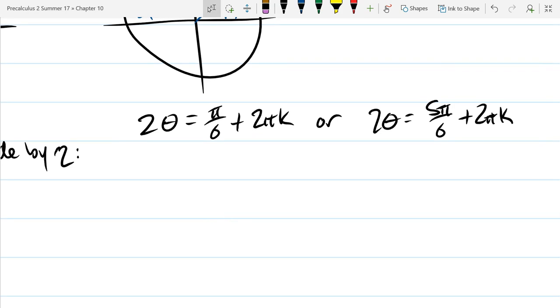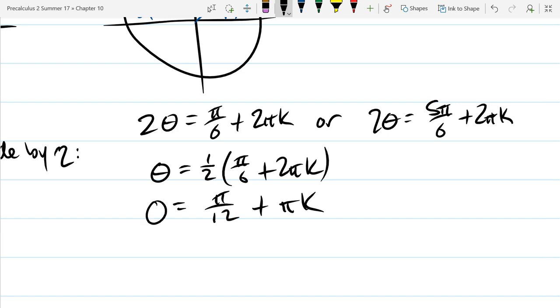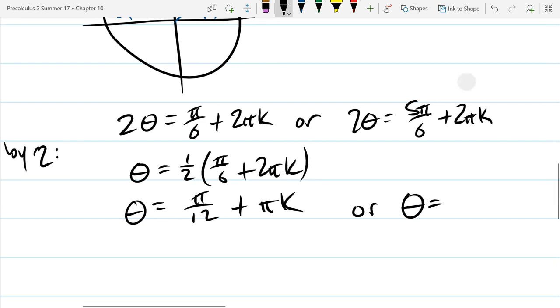And now we divide both sides by two. So I could write as one half times pi over six plus two pi k, which is pi over 12 plus pi k.